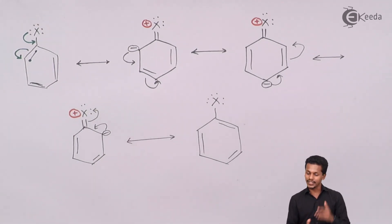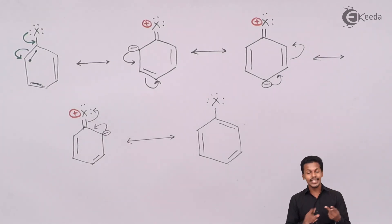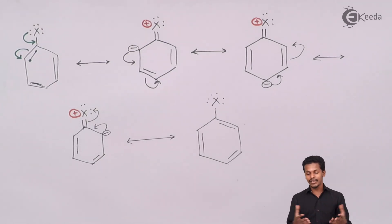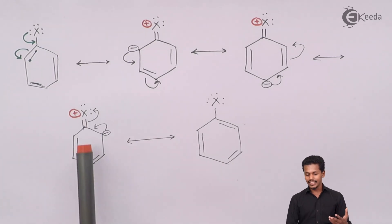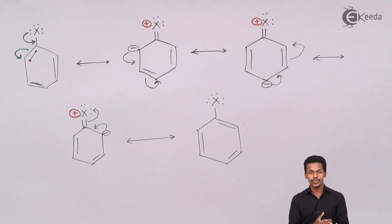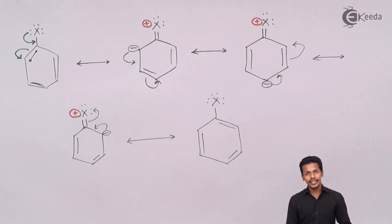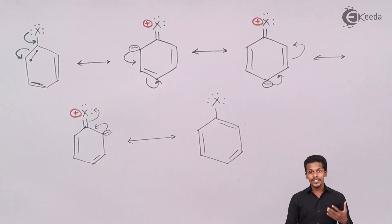These are the main three reasons: first, aryl halides show double bond character between carbon and halogen; second, SN1 mechanism is not possible; third, SN2 mechanism is also not exhibited. Additionally, the delocalization of electrons makes the benzene ring more negative when the aryl halide is attached, making substitution reactions very difficult. However, there are certain reactions that do exhibit nucleophilic substitution but under drastic conditions.